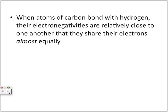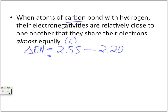When atoms of carbon bond with hydrogen, their electronegativities are relatively close to one another, so they share their electrons almost equally. The electronegativity of carbon is 2.55, minus the electronegativity of hydrogen, 2.20, gives a change in electronegativity of 0.35, which makes this bond nonpolar covalent.